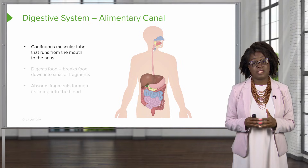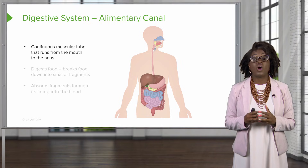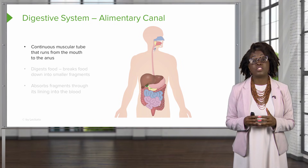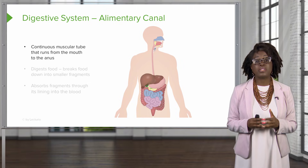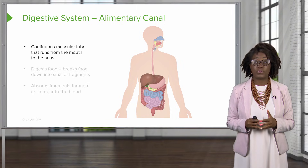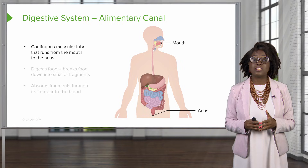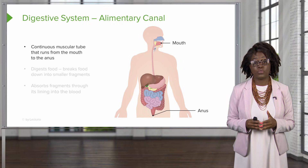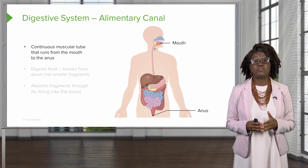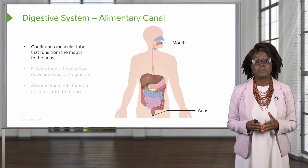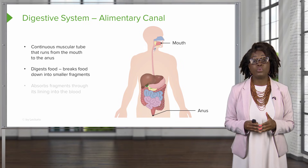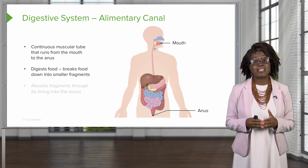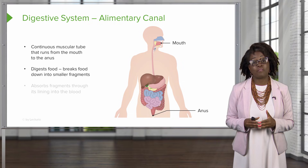The organs of the digestive system are going to fall into two main groups. You have the alimentary canal, also referred to as the GI tract, which is a continuous muscular tube that runs from the mouth to the anus. In this canal, we're going to digest food by breaking it down into smaller fragments.